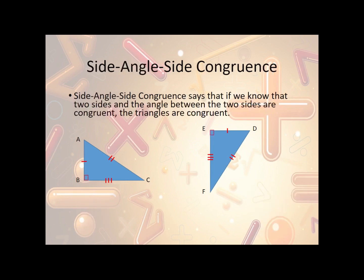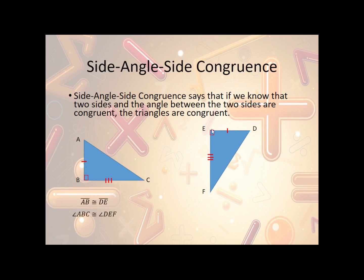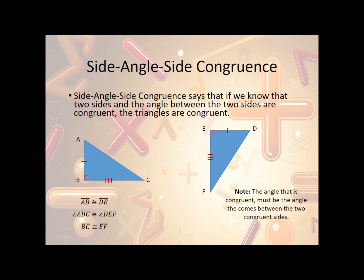Now let's take a look at side-angle-side congruence. Side-angle-side congruence says that if we know that two sides and the angle between them are congruent, then the triangles are congruent. Notice we have a side, an angle, and a side — the order matters. The only way it works is if we have the two sides and the angle that goes between them. So here AB is congruent to DE, angle ABC is congruent to angle DEF, and side BC is congruent to side EF. Therefore, triangle ABC is congruent to triangle DEF.